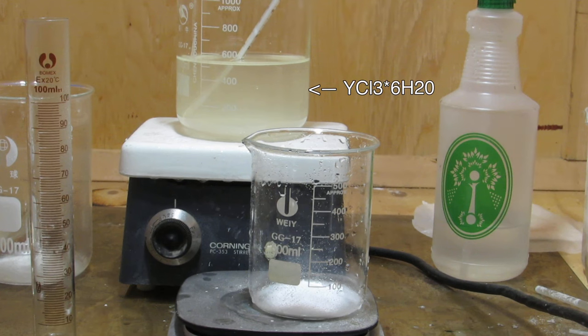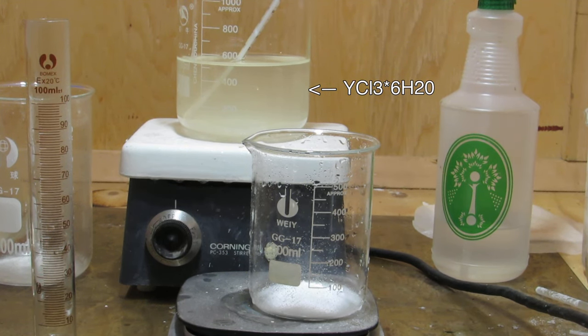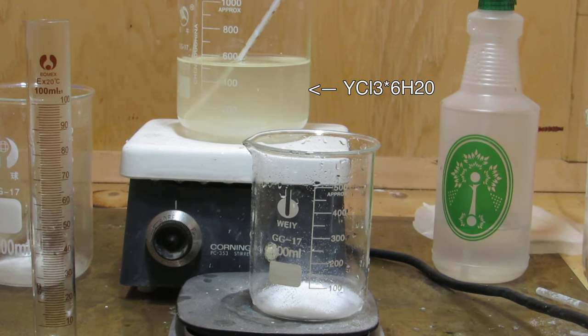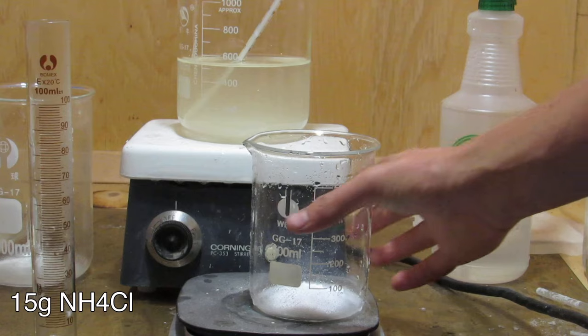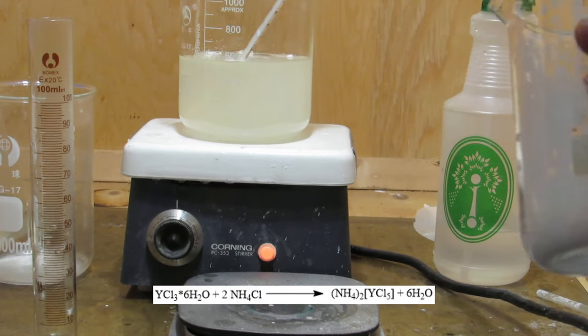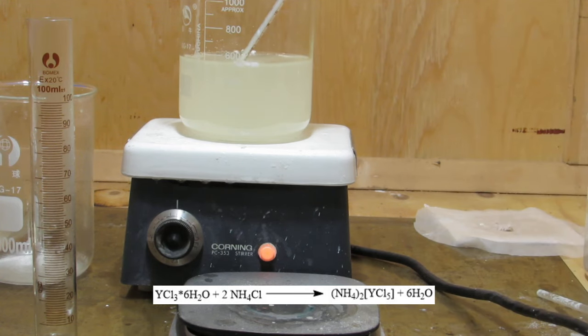Next, we will need to prepare anhydrous yttrium chloride to isolate the yttrium metal. However, boiling down yttrium chloride directly will result in yttrium oxychloride forming during the dehydration. To get around this, 15 grams of ammonium chloride is added to the yttrium chloride, which forms a double salt that can be successfully dehydrated and then decomposed at higher temperature to the anhydrous yttrium chloride.